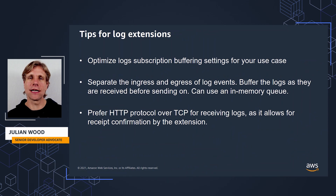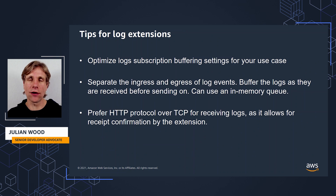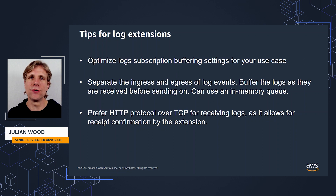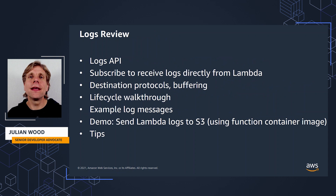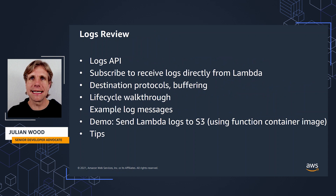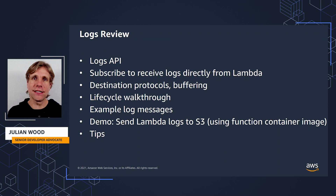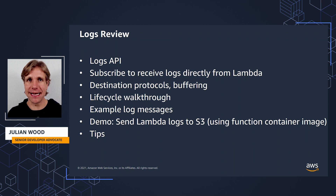Some tips for managing logging extensions: think about the subscription buffering settings to manage memory and the number of logs you can process. Separate the receiving and sending of logs to be more efficient, and consider using an in-memory queue for this. Use HTTP over TCP for your log receiver, as you're less likely to lose or corrupt any logs. In this video I've been through the logs API and how you can subscribe to receive logs directly from Lambda. I explained the destination protocols and buffering settings, walked through the Lambda lifecycle again highlighting logs, showed a demo of sending logs directly to S3 using an extension in a function packaged as a container image, and provided tips for optimizing your logging extensions.